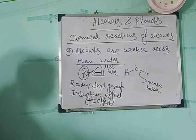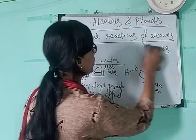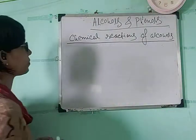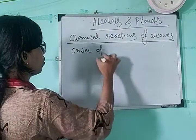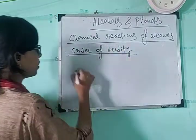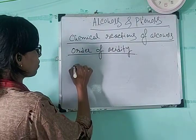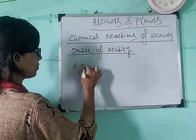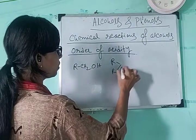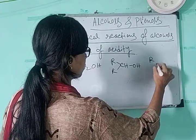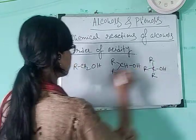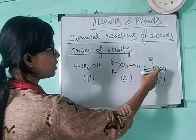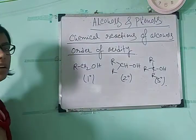What will be the order of acidity for primary, secondary, and tertiary alcohols? For a primary alcohol, the carbon bears one alkyl group; for secondary, two alkyl groups; and for tertiary, three alkyl groups attached to the carbon bearing the OH group.